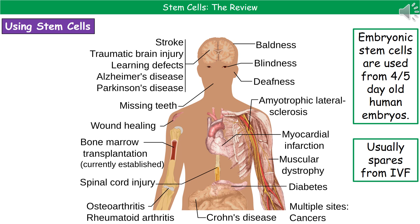When thinking about all those potential uses, why would people have a problem with this? Why would there be any controversy around something that could be so revolutionary? The answer generally comes down to the fact that the embryonic stem cells we tend to use come from four or five day old human embryos. Some people have an issue with using human embryos — there's the argument that it could have been a human life, and it may go against religious beliefs.